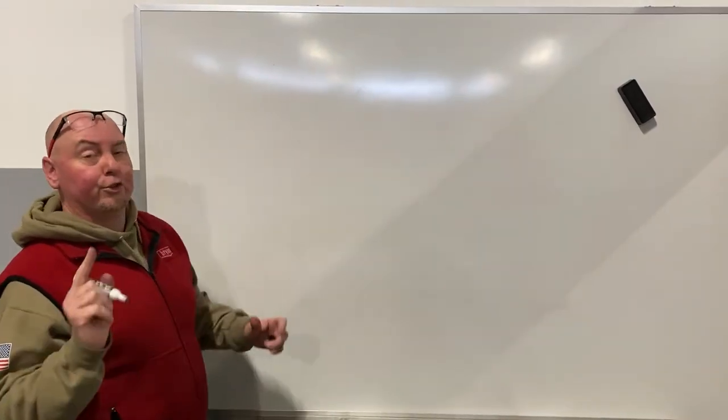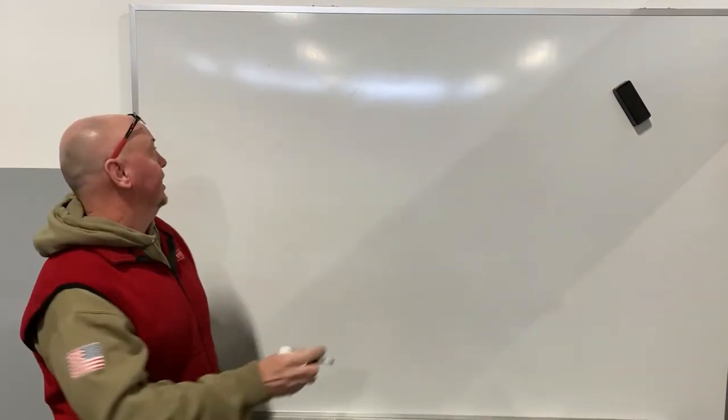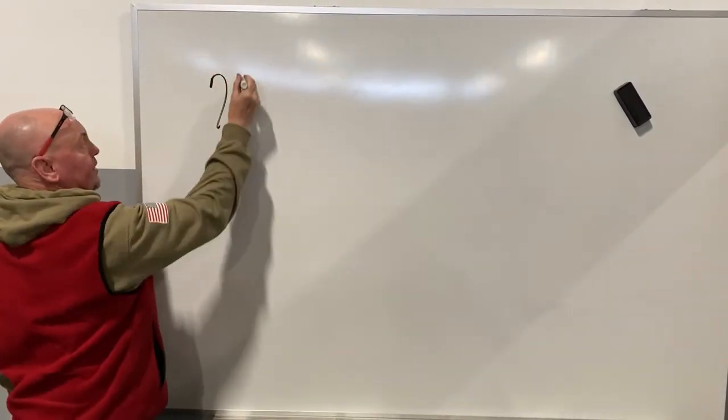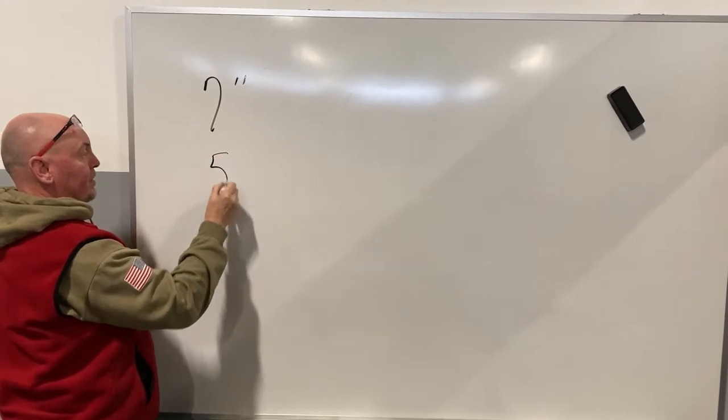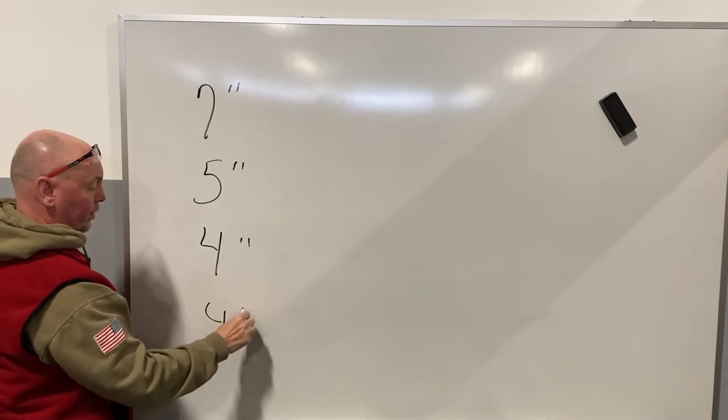So if I had appliances and I'm trying to determine the manifold, the one that can handle all the appliances, so let's say I have one appliance with a 7 inch flue, one with a 5 inch flue, 4 inch flue, and another 4 inch flue.